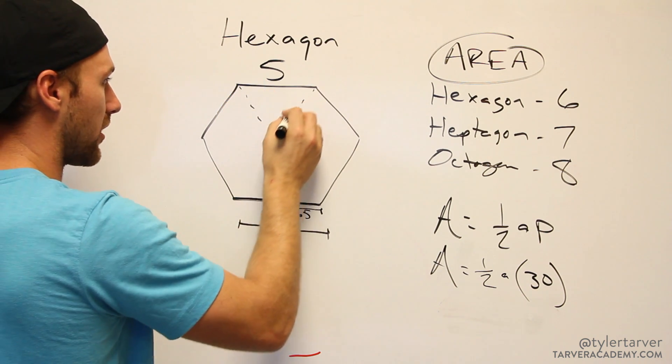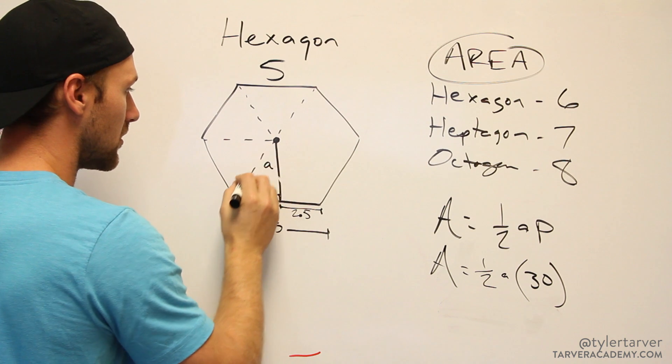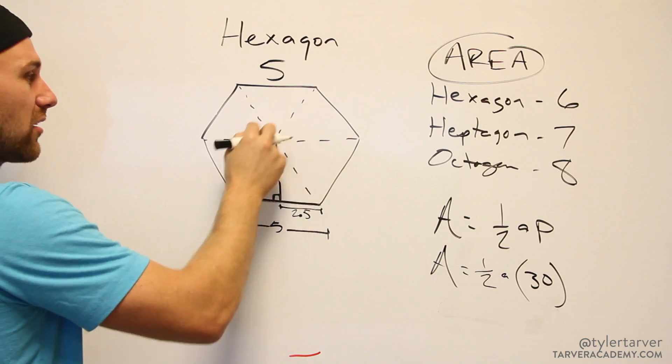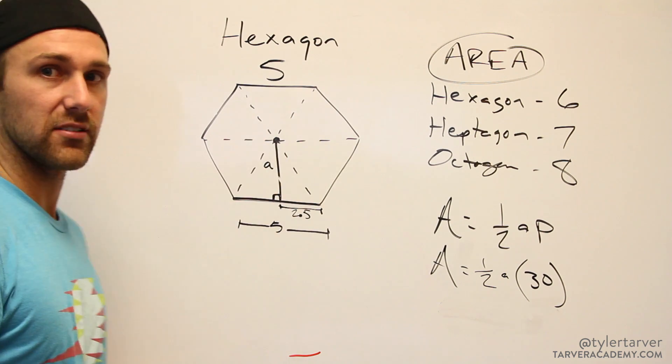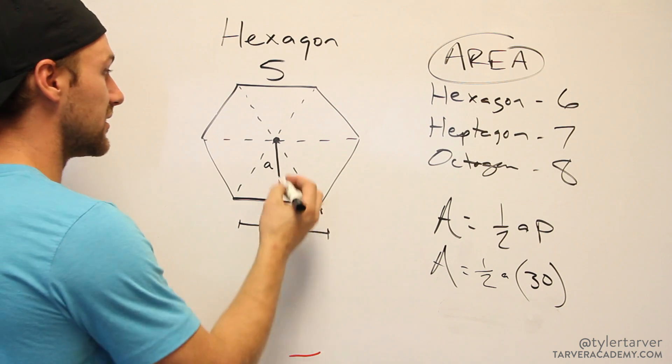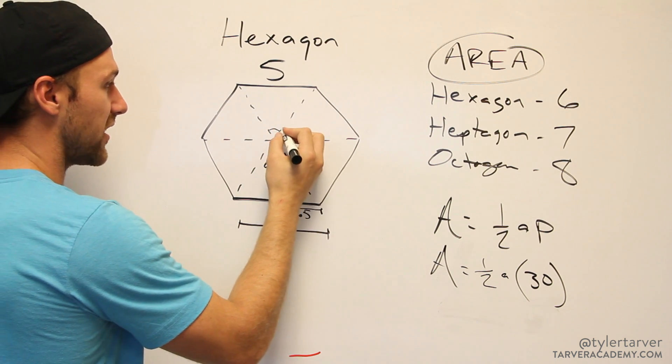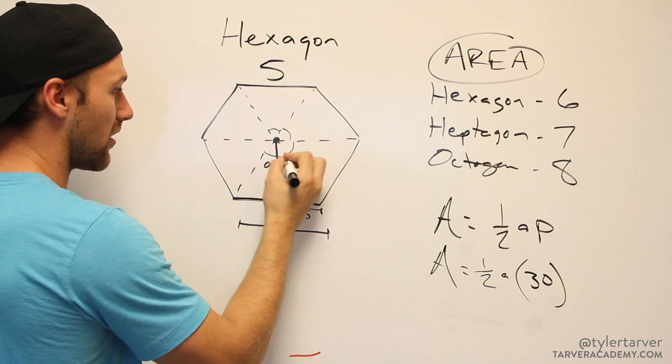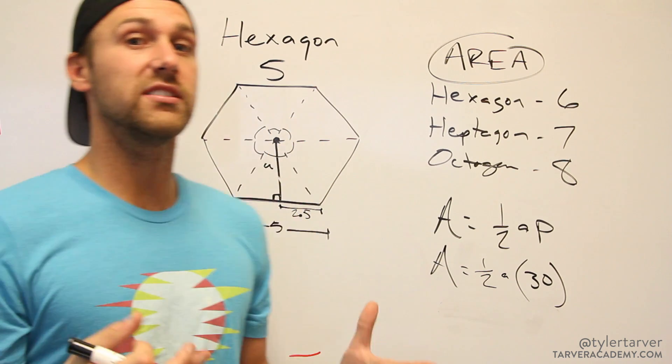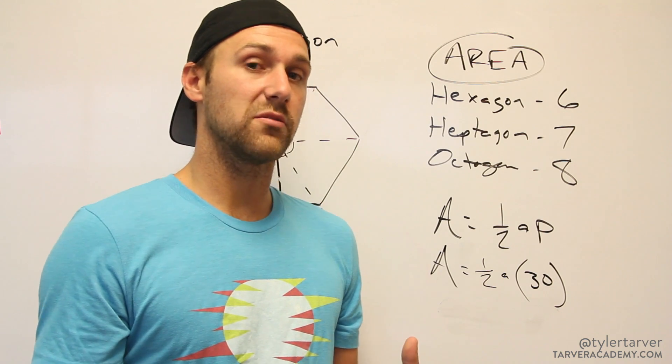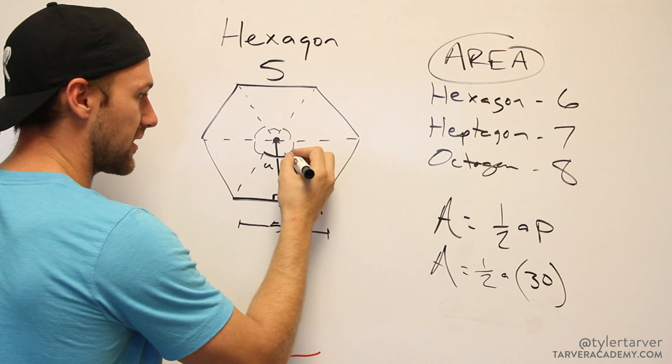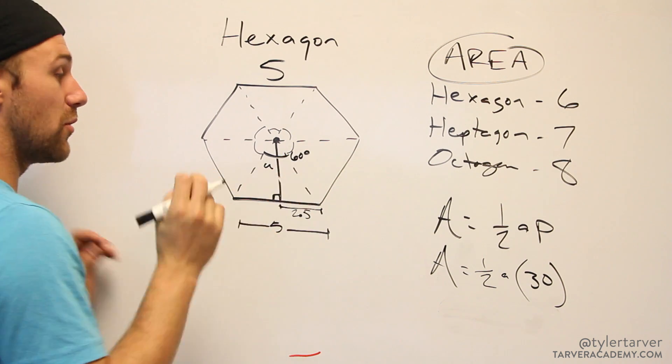What we do is we split this up into a bunch of triangles. When we do that, we know that all the way around is 360 degrees. If I wanted to find the measure of each of these interior angles, I know there's gonna be six angles: one, two, three, four, five, six. I just divide 360 by six, which gives me 60. So I know this angle right here is 60 degrees.